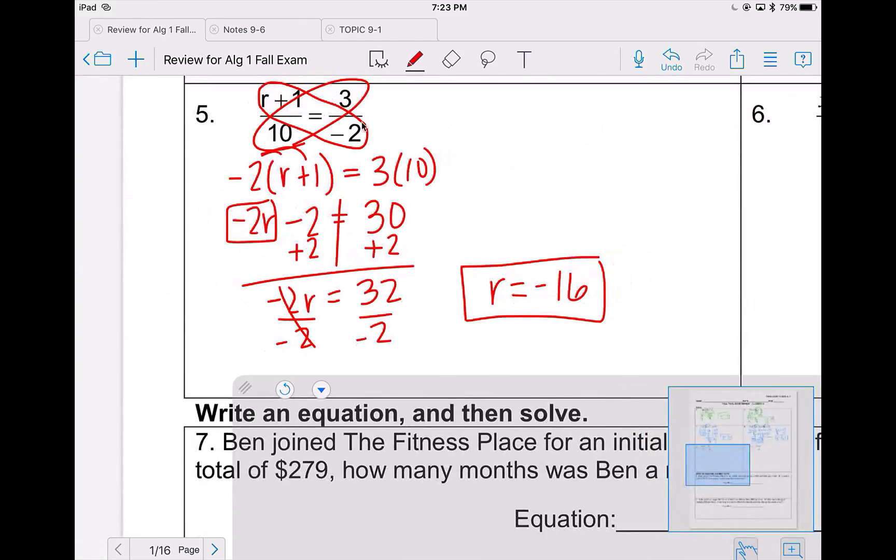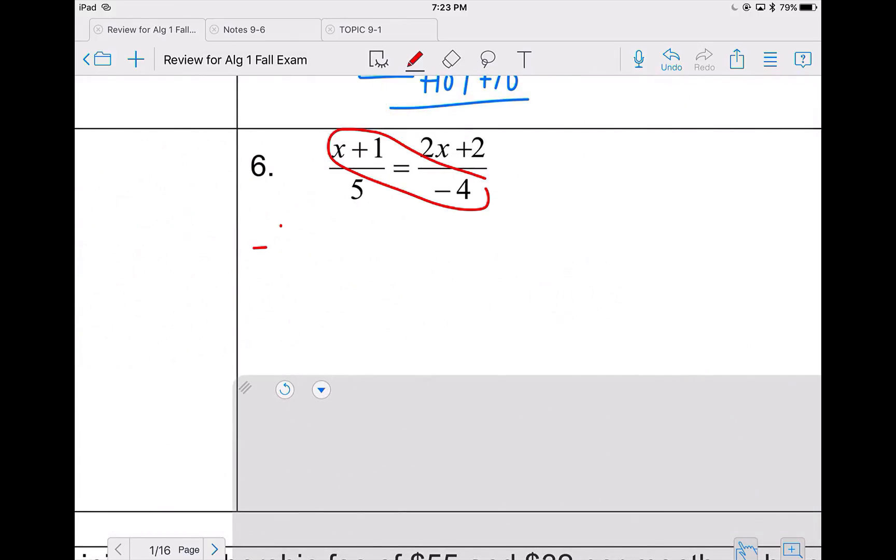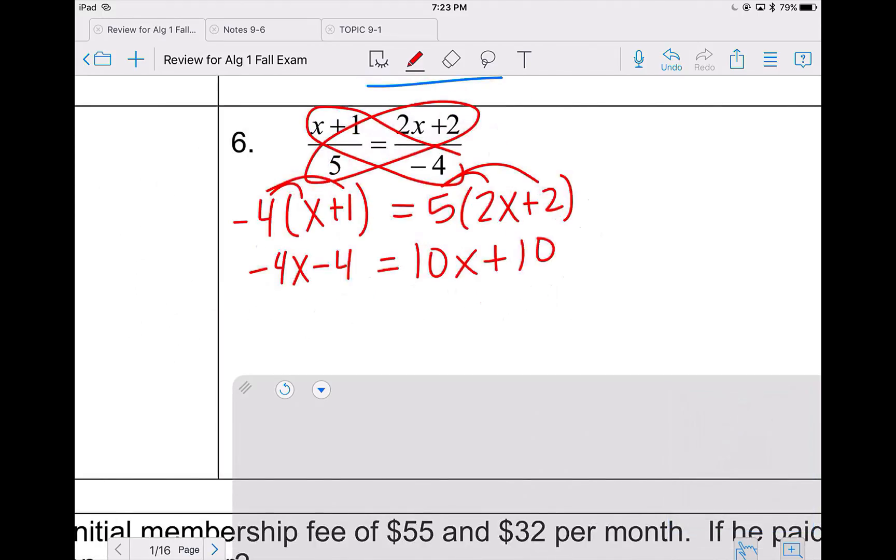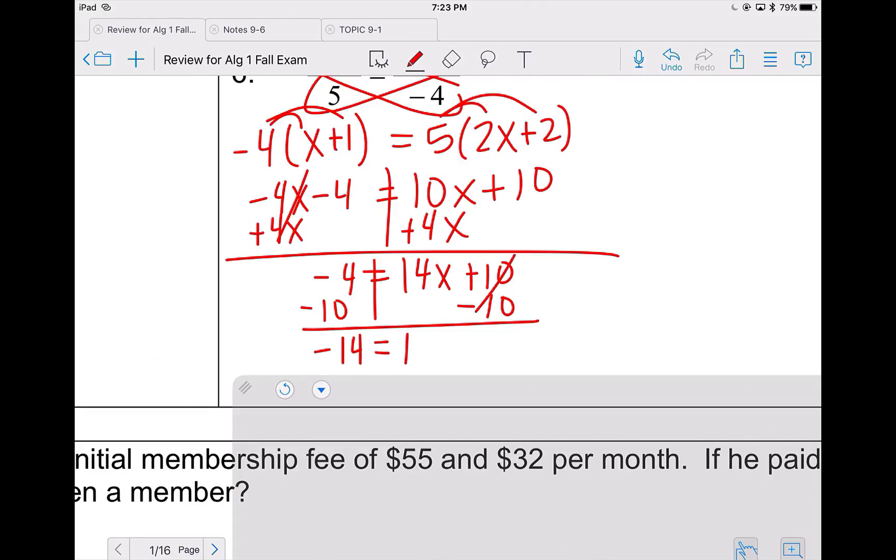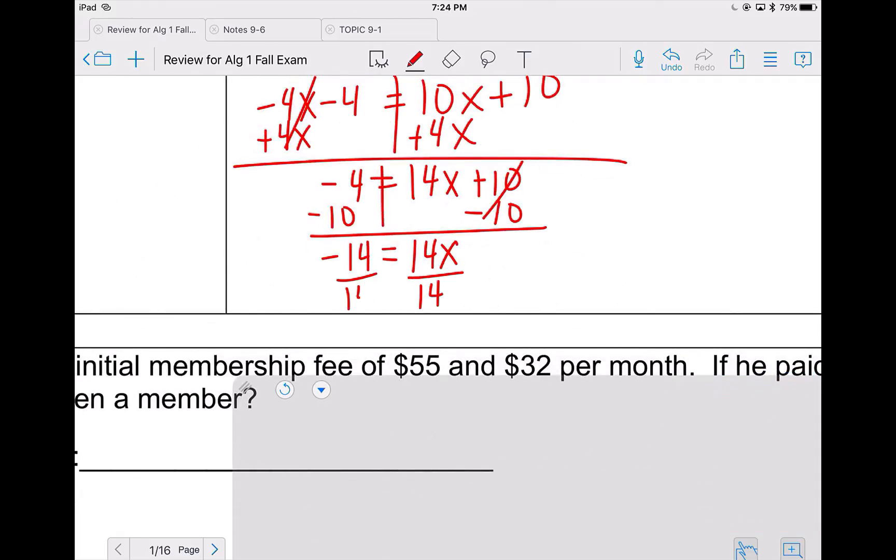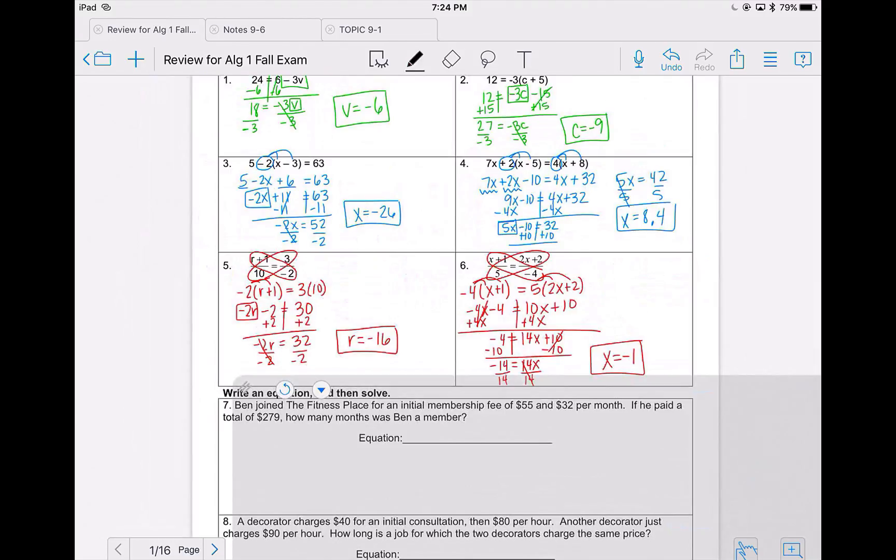When you see a problem like this, remember that you need to cross multiply. Same thing on problem 6. I'm going to cross multiply and it is negative 4 times all of x plus 1 and then 5 times all of 2x plus 2. So negative 4 times x, negative 4 times 1, 5 times 2x, 5 times 2. Now this problem is similar to problem 4. I'm going to move the smaller x, the negative 4x to the other side through the opposite operation. 10x plus 4x is 14x plus 10. I'm then going to move the 10 through the opposite operation, which would be a subtraction. And then divide both sides by 14. And negative 14 divided by positive 14 is a negative 1. Again, with all of these, you can take your answers and plug back into your original equation.